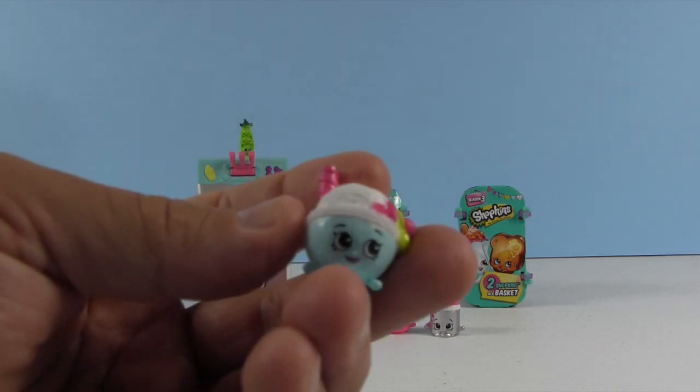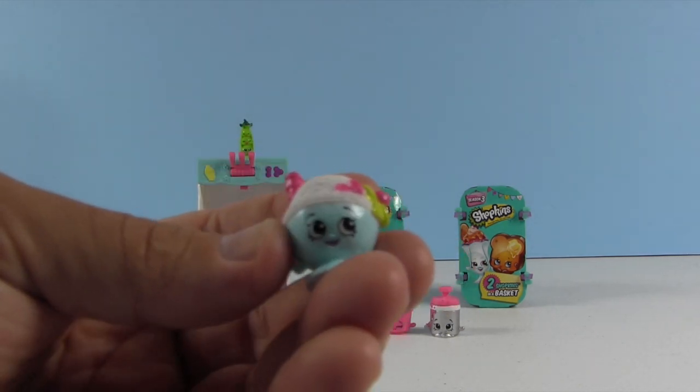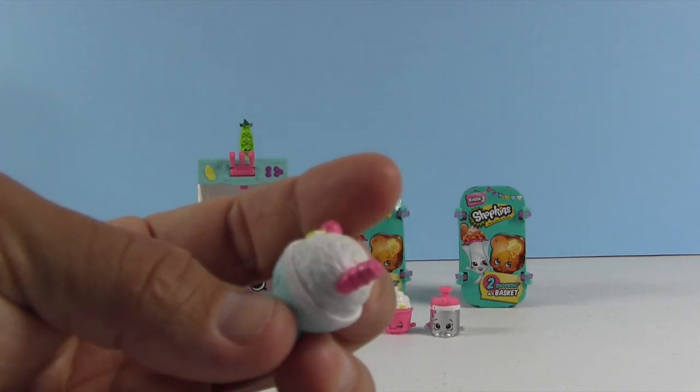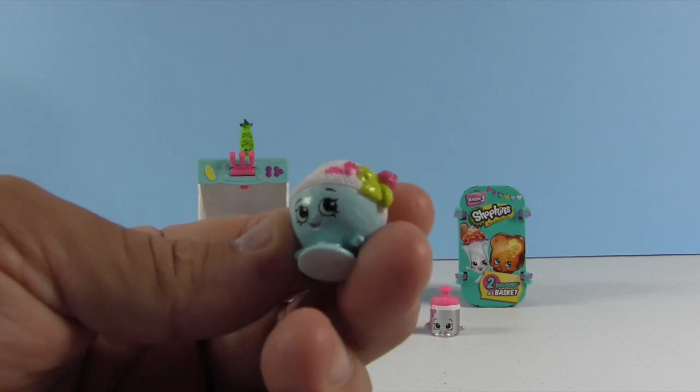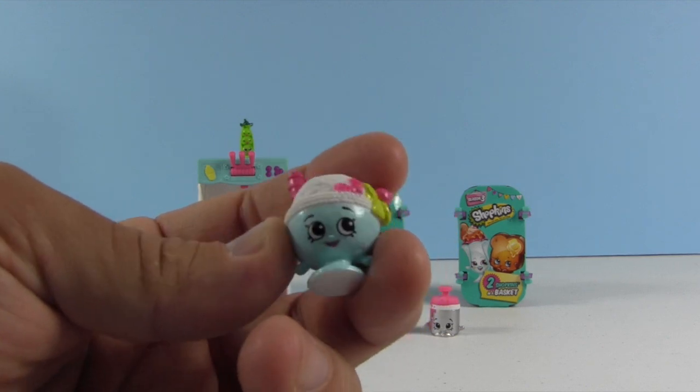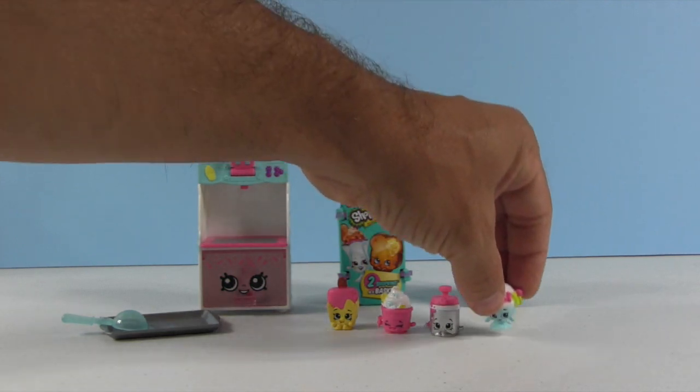Alright, who is this one? That's Scoopy One. Scoopy One. So I guess it's like a little sundae, like just a little thing of ice cream, a little scoop. Scoopy One.